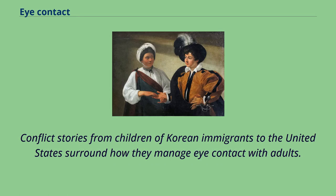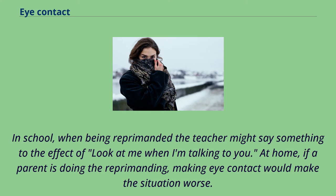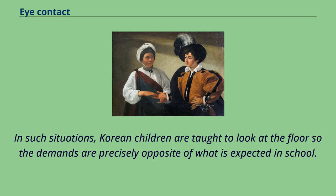Conflict stories from children of Korean immigrants to the United States surround how they manage eye contact with adults. In school, when being reprimanded, the teacher might say something to the effect of 'look at me when I'm talking to you.' At home, if a parent is doing the reprimanding, making eye contact would make the situation worse. In such situations, Korean children are taught to look at the floor, so the demands are precisely opposite of what is expected in school.